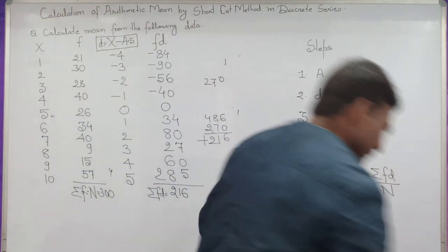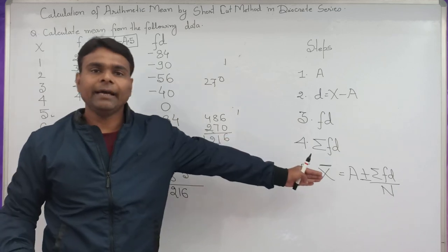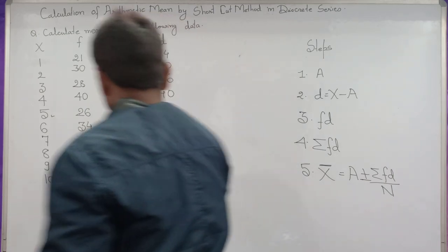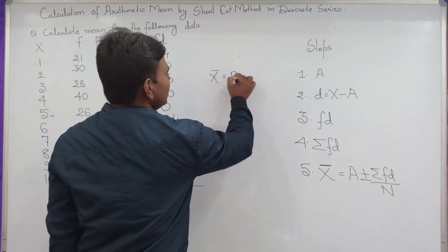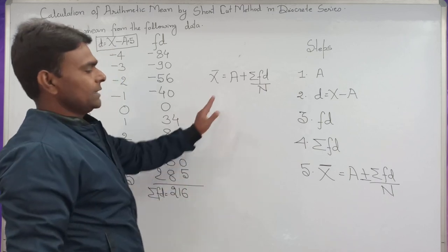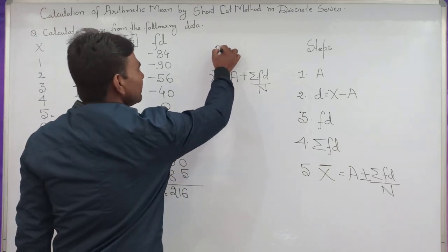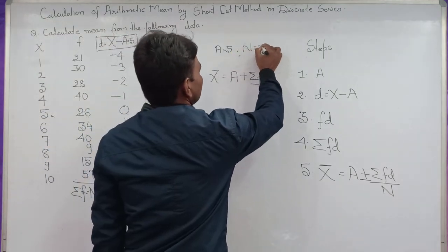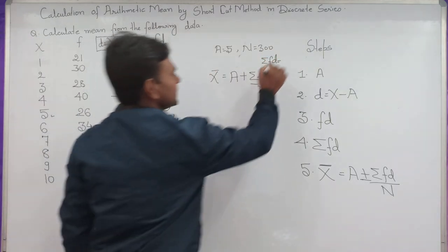Simply we need to substitute every value in this formula. I have already written the formula. Mean equals assumed mean plus summation of FD by N. Very simple, we just need to replace the values. A equals 5, summation of FD equals 260, N equals 300.